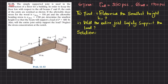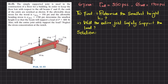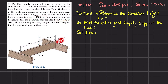Welcome back. Problem 11-53. The simply supported joist is used in the construction of a floor for a building. To keep the floor level with respect to sill beams C and D, the ends of the joists are notched as shown. If the allowable shearing stress for wood is 350 psi and allowable bending stress is 1700 psi, determine the smallest height h so that the beam will support the load of 600 pounds. We will also check whether the entire joist will safely support the load, neglecting stress concentration at the notch.